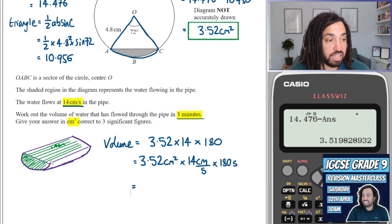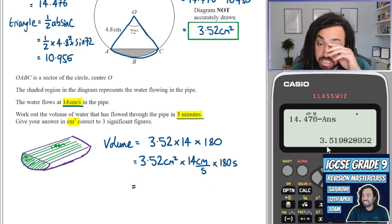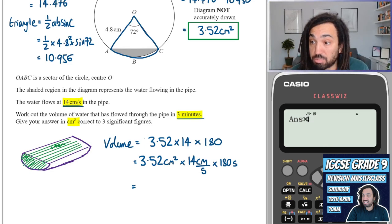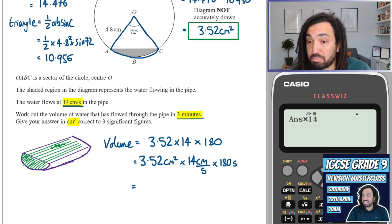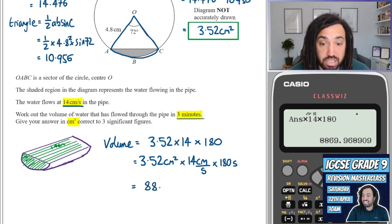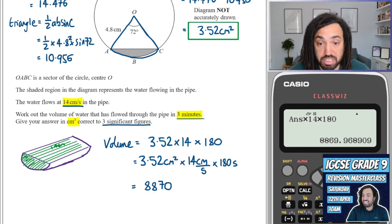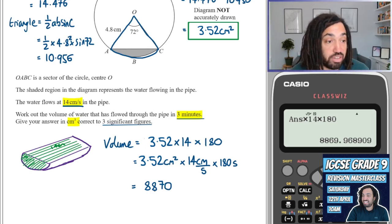So we can do the calculating of the numerical part. So we can take this answer, we can multiply that by 14, and then we can multiply that by 180, and we get 8870, which is nice, because it needs to be rounded to three significant figures, and we've literally just done that.